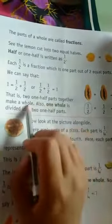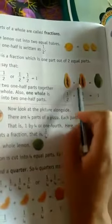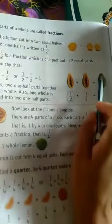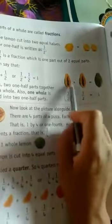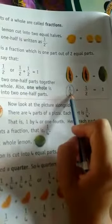That is, two one-half parts together make a whole. Also, one whole is divided into two one-half parts. When you divide in the middle, you get two halves. Half is written as one by two. Half plus half will make one papaya, one whole papaya.